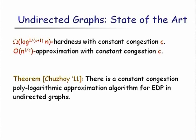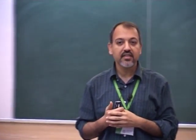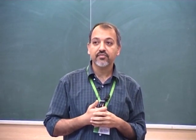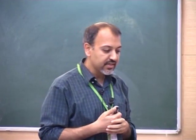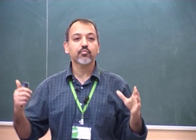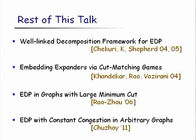This gap has essentially disappeared with the remarkable result of Julia Chuzhoy, which shows that with constant congestion it is possible to get a polylogarithmic approximation to EDP in undirected graphs. The truth was really closer to the hardness results. This result builds very strongly on developments over the last six to seven years and adds to those a very powerful new machinery.